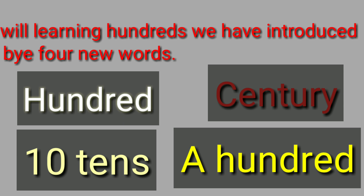First: 100 means Shambar. Second: 10 tens means Dashak. Third: Century means Shatak. Fourth: A hundred means Shatak.